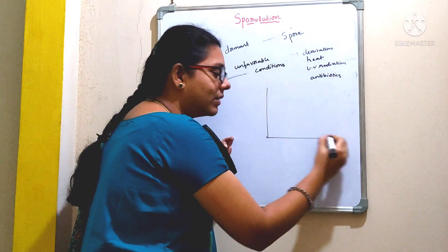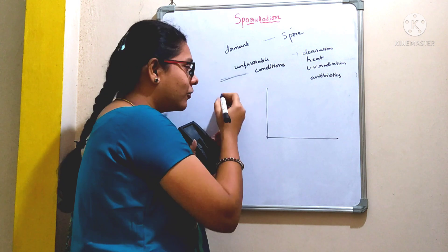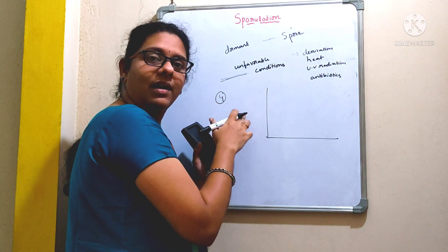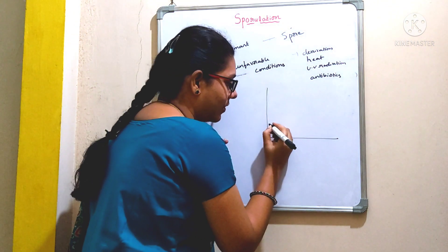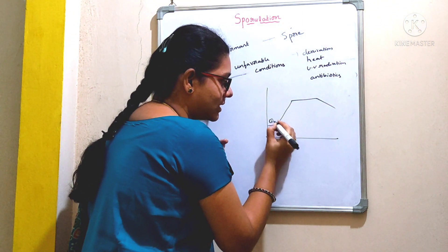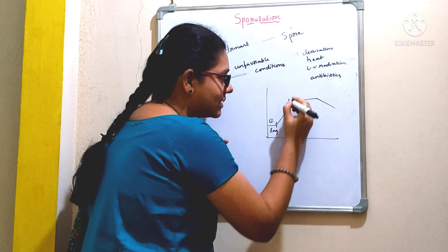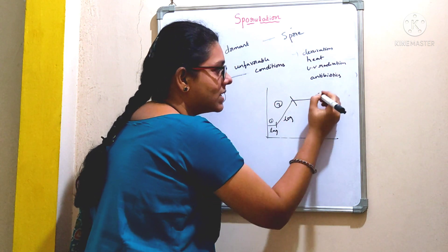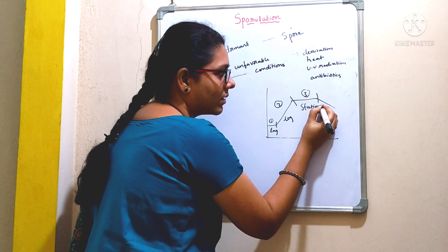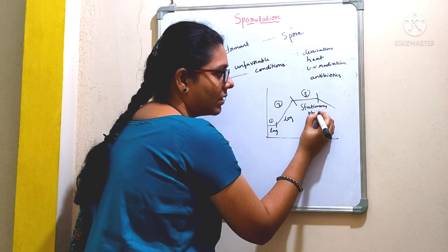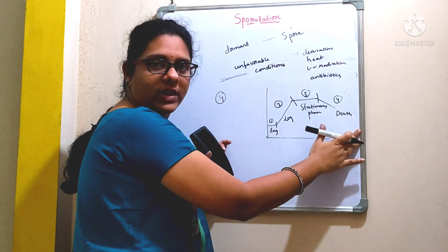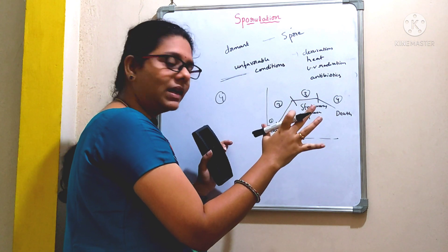If you look into the bacterial growth curve, we observe four different phases: lag, log, stationary, and death phase. We usually get a sigmoidal curve. The first phase is the lag phase, the second phase is the logarithmic phase, the third phase is the stationary phase, and the fourth phase is the death or decline phase.